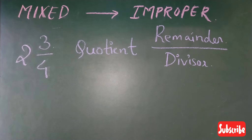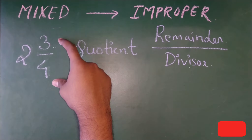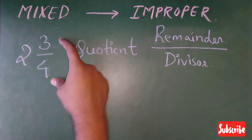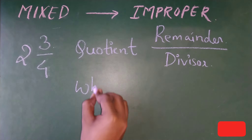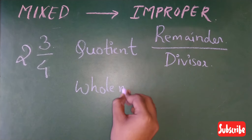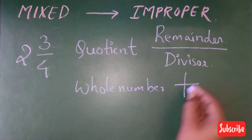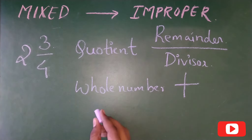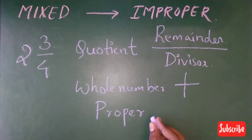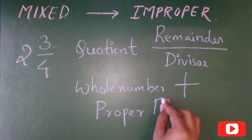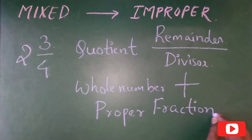A mixed fraction can be understood as one whole number plus one proper fraction. So you can write a mixed fraction as: whole number plus a proper fraction, where the numerator is less than the denominator.